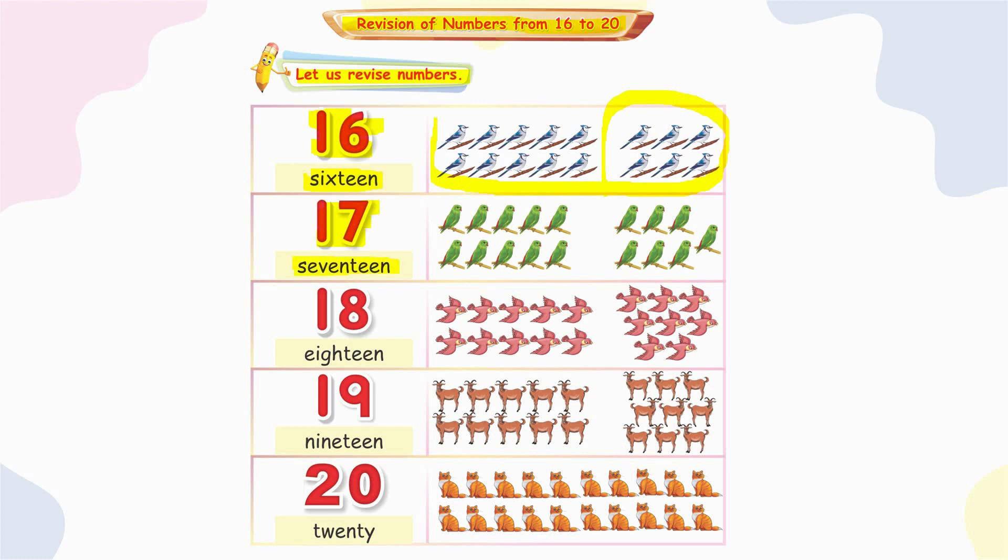18. One ten and eight ones make 18. E-I-G-H-T-E-E-N, eighteen. Here are 18 birds.